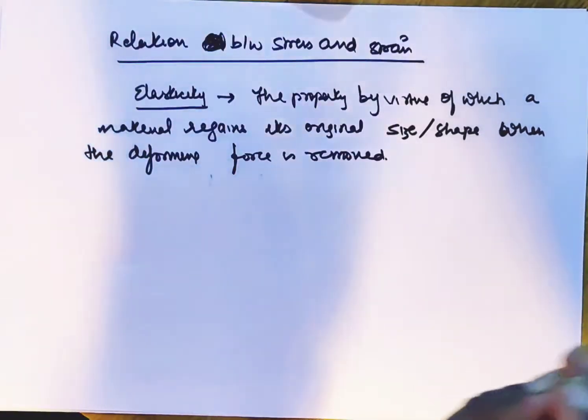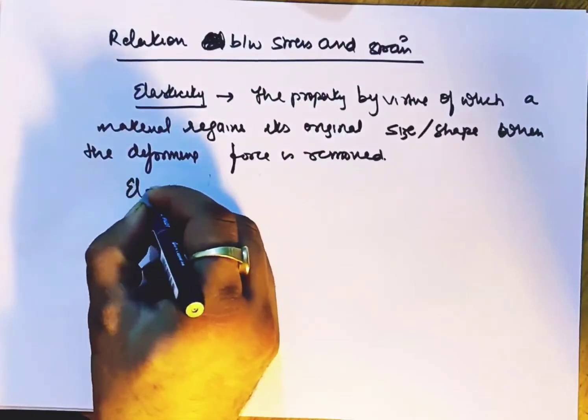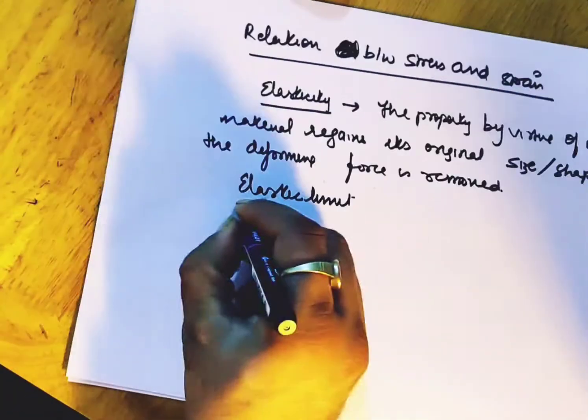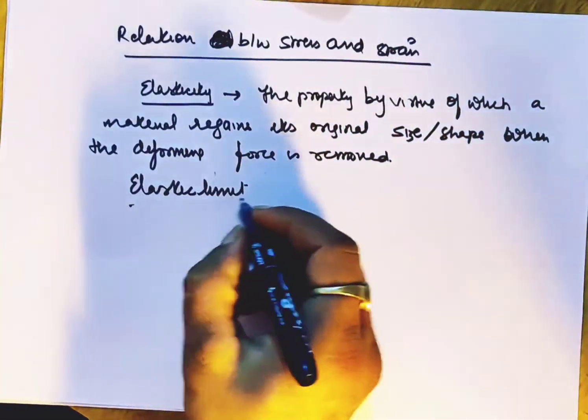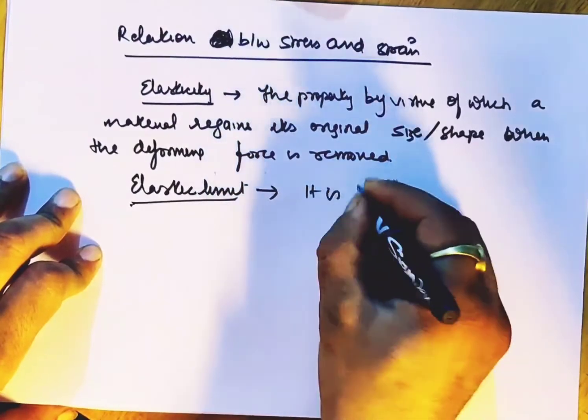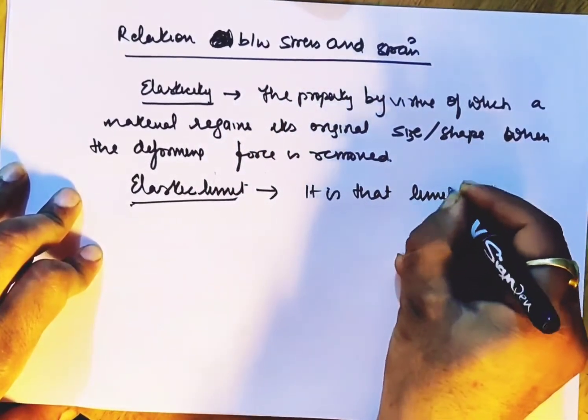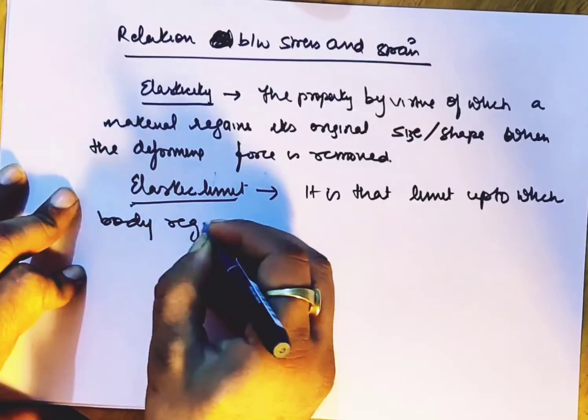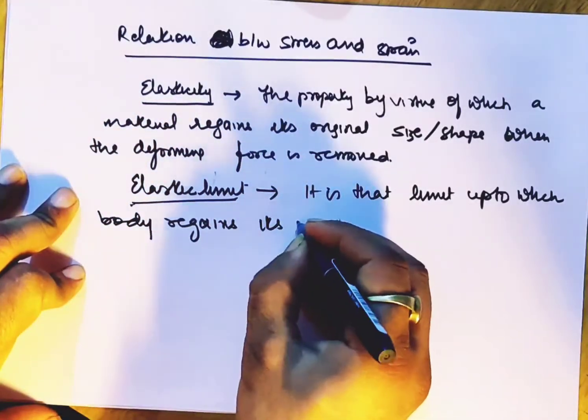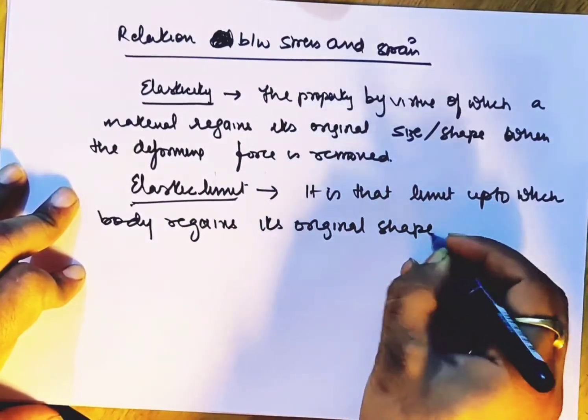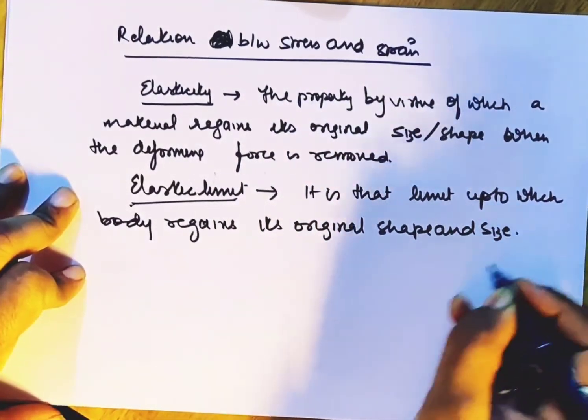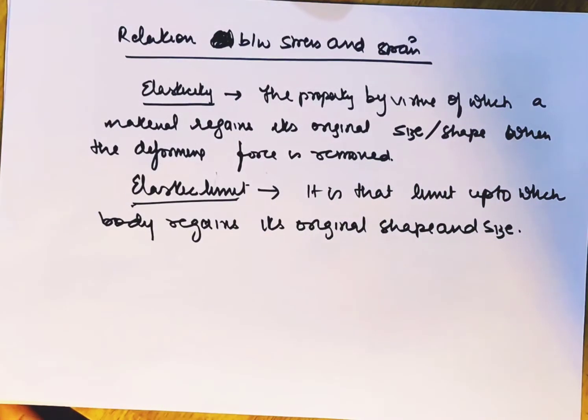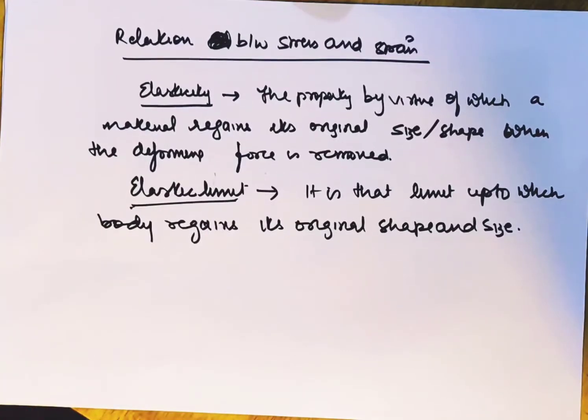Then one word will be elastic limit. What is elastic limit? It is that limit up to which the body regains its original shape and size. Beyond this, the body will not attain its original shape or size. We call this the elastic limit.